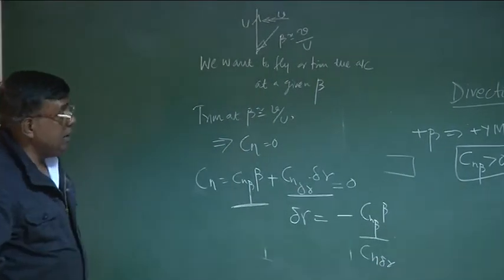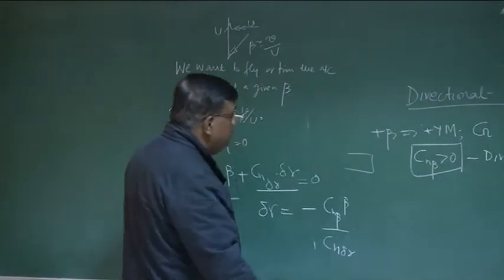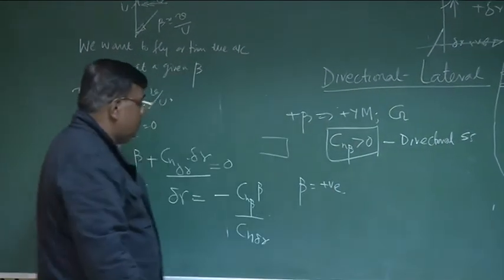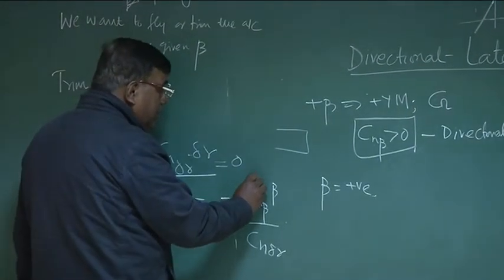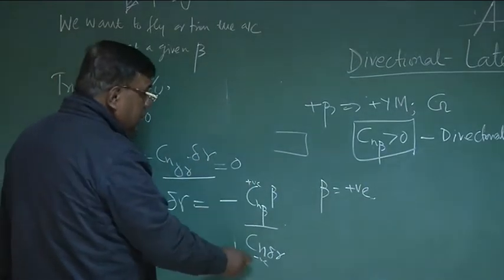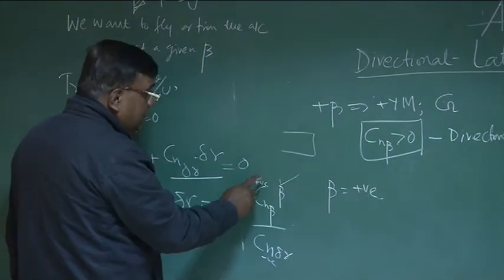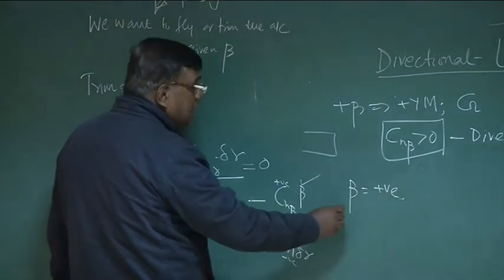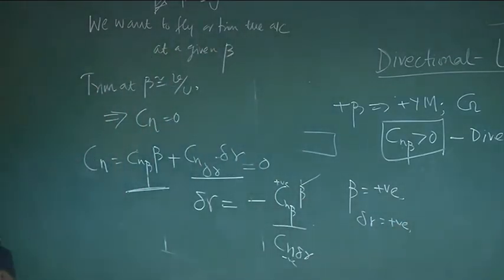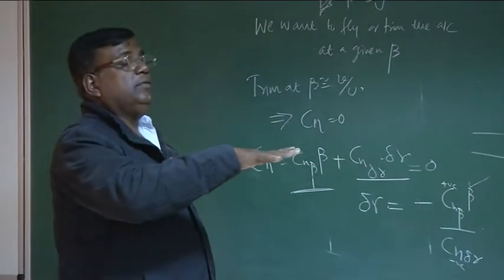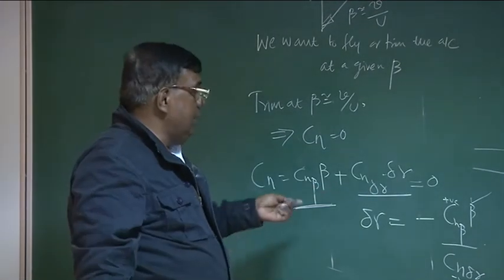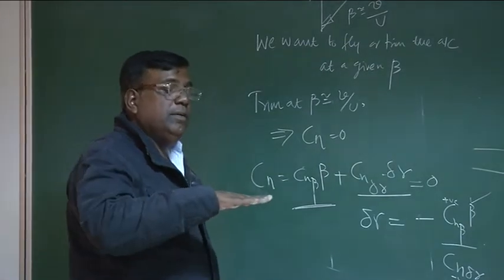Now the interesting thing: if I want to trim the airplane at a positive beta, what is the sign? Cn_beta is positive, Cn_delta_r is negative, and the overall sign of delta_r is positive. This means, if I am flying in a crosswind from the right and want to maintain that beta, I have to put the rudder towards the left. That gives the configuration where I am flying at the desired sideslip angle.